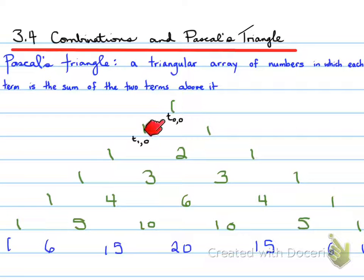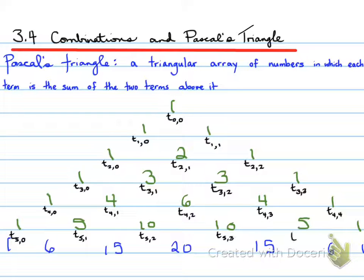Now, something to note that each of these has a specific position. The position is term 0,0. That's the top. Next one is term 1,0 to term 1,1. Next one is term 2,0, term 2,1, term 2,2, and so on. We can go all the way down the Pascal's triangle to label each term number. And once we labeled each term number, we can now make the connection to combinations.